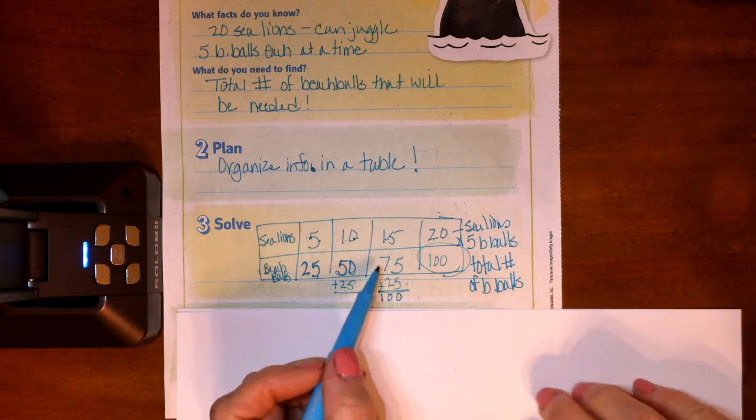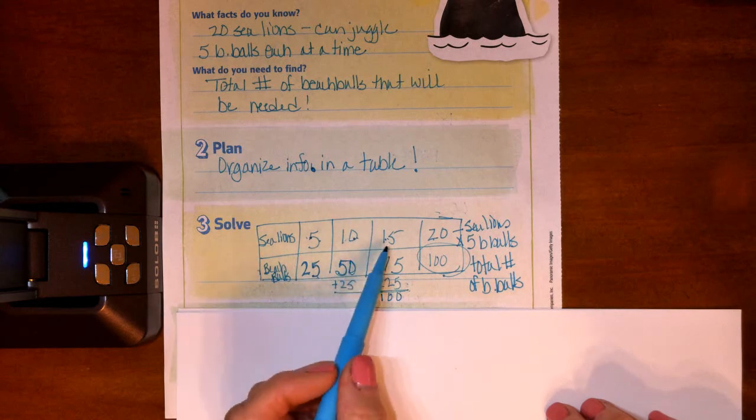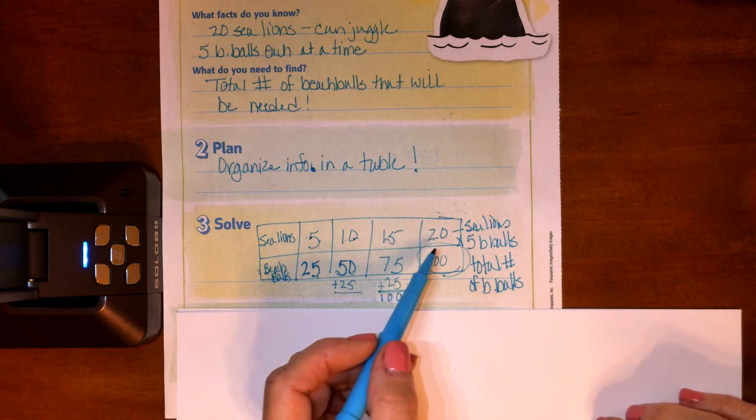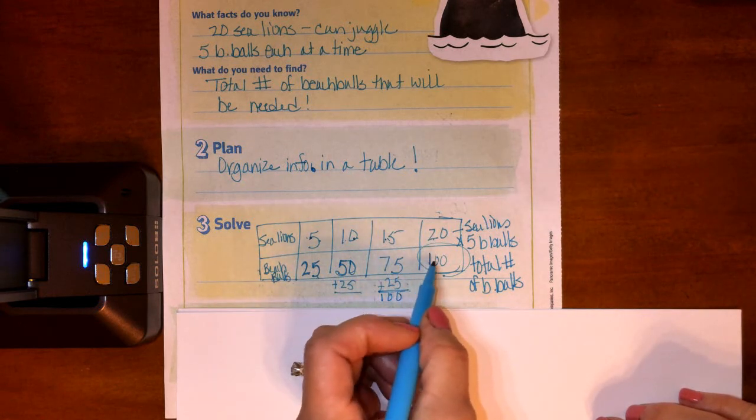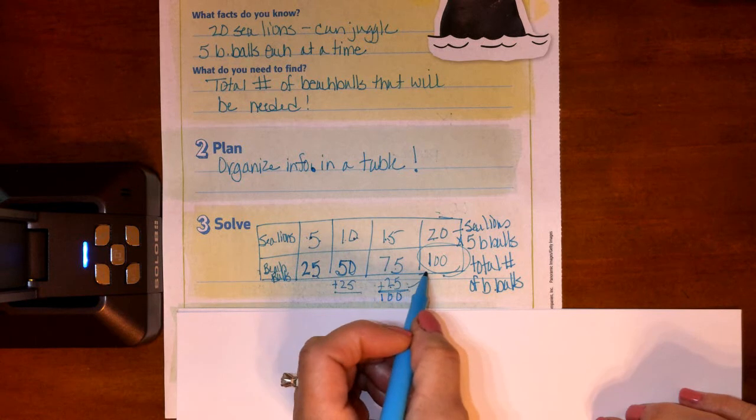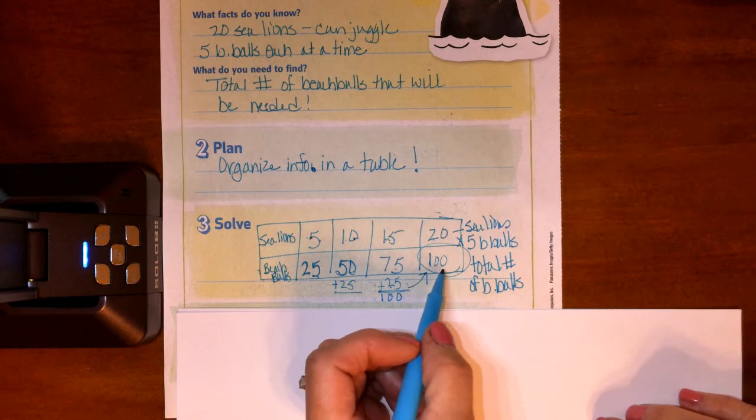So we have 15 sea lions for a total of 75 beach balls. So 20 sea lions are going to need 100—75 plus 25 is 100. 20 sea lions are going to need 100 beach balls.